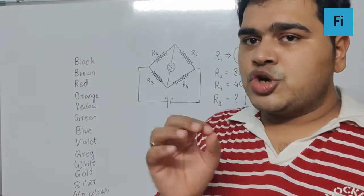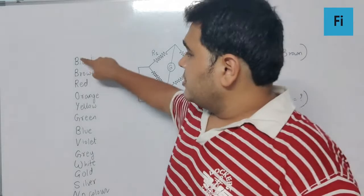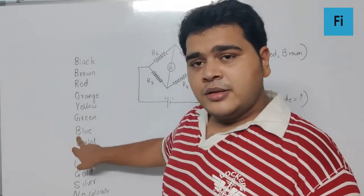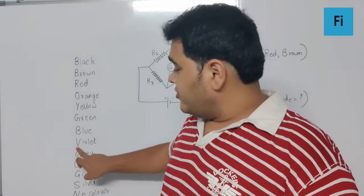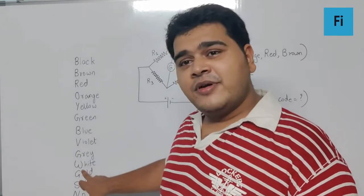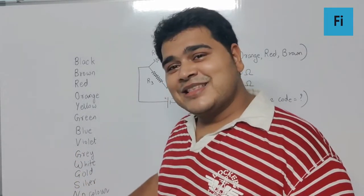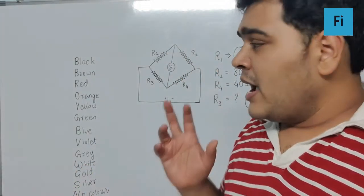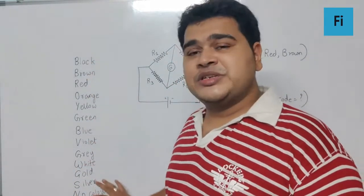The shortcut which I can give you is B.B. Roy of Great Britain have a very good wife wearing gold, silver necklace. So this is something which you can remember if you want to, and the numbers associated with them is also very important.